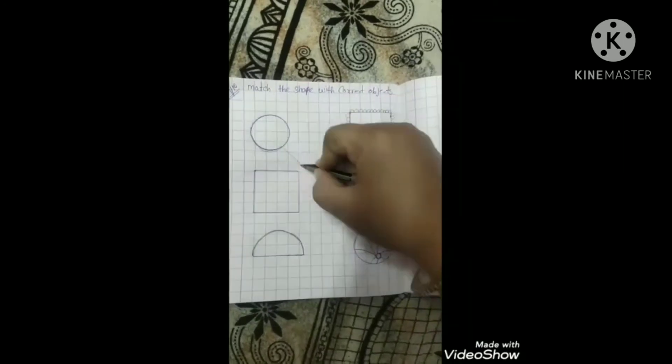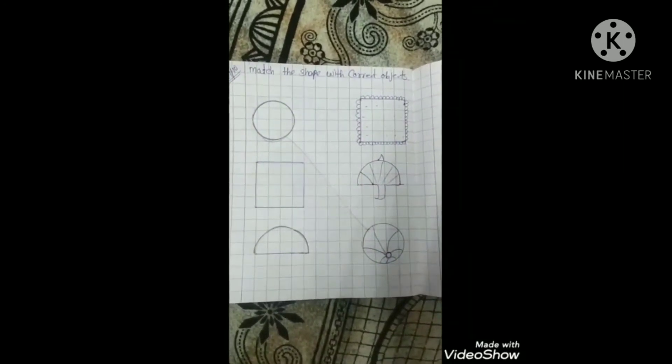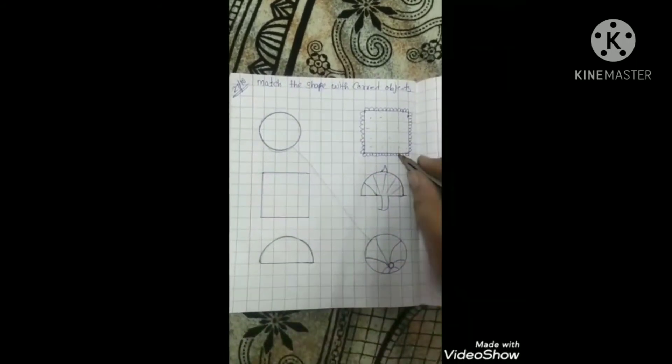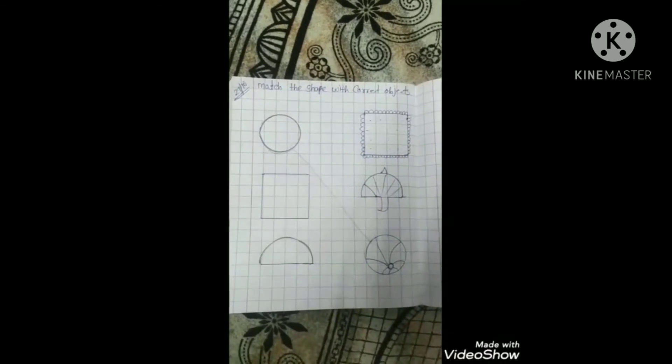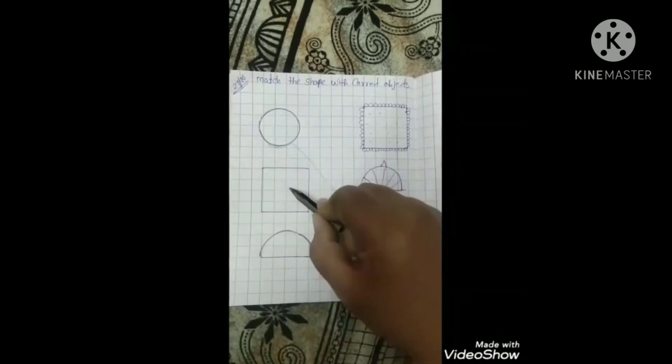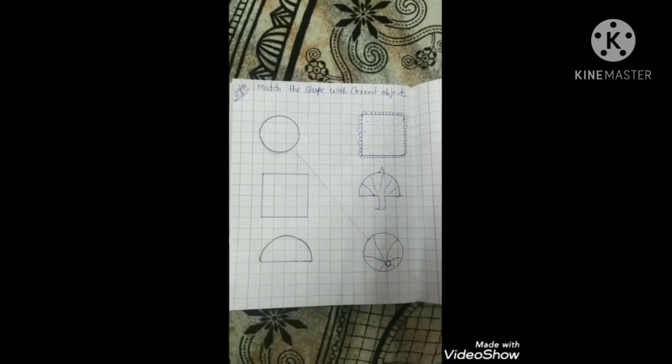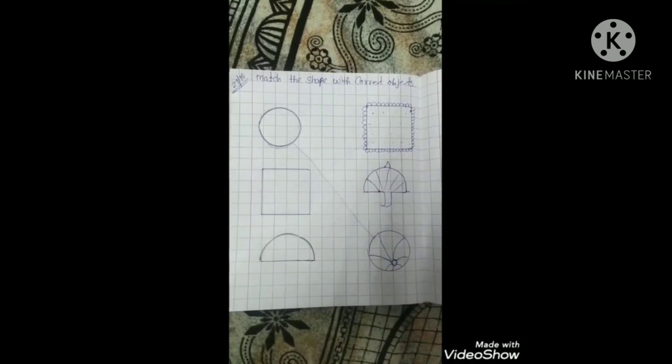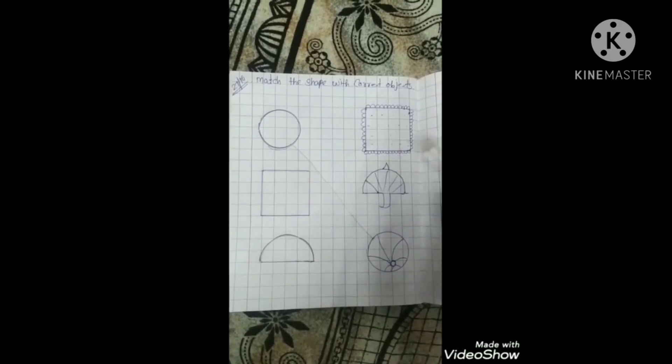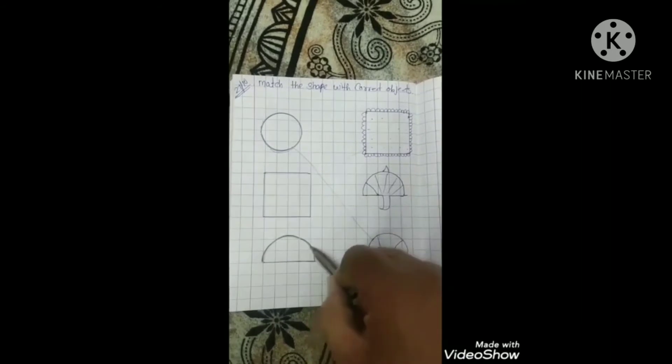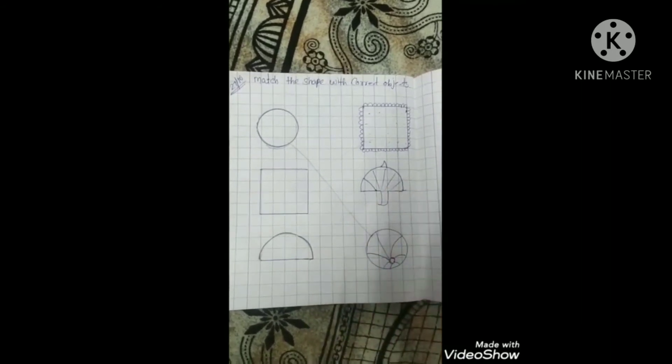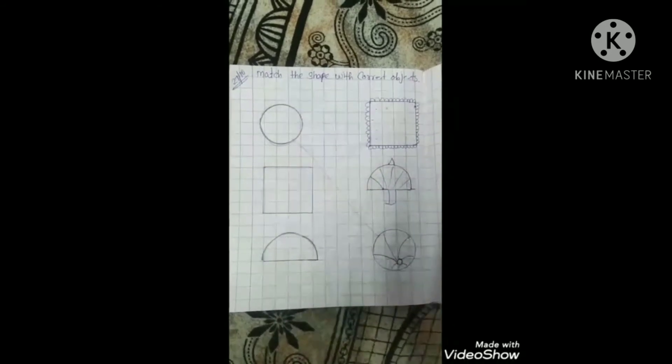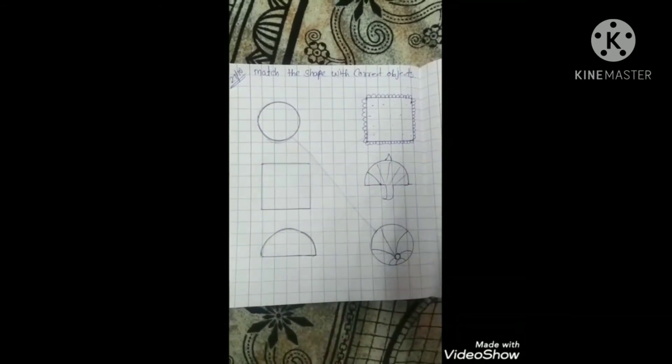Okay, now the next shape is square. And hanky is shape of square, right? So you have to match with the hanky. Now third one is semicircle and umbrella is shape of semicircle. So you have to match with the umbrella like this. So kids, this one is match the shape with the correct objects and you have to write in your math notebook.